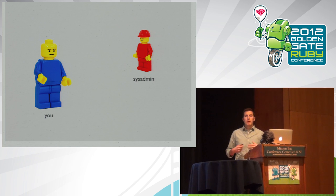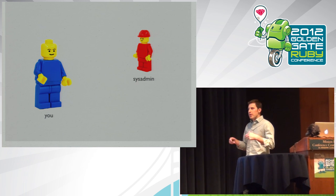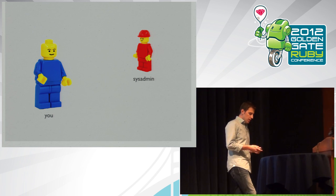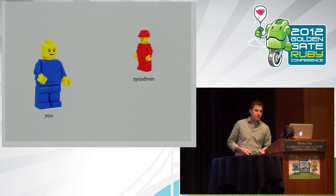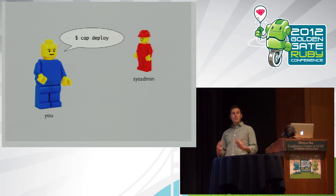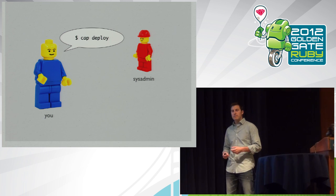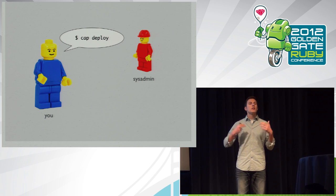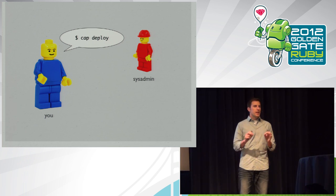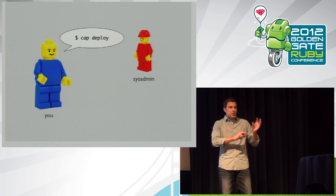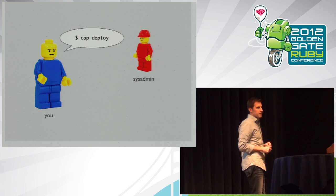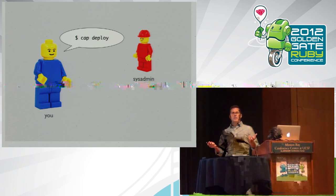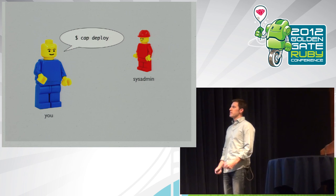We're the ones that wrote the code that had the memory leak or the error condition that brought the system down, but they're the first line of defense. A good example is when it's time to deploy new versions of our applications into production. In most organizations, you'll tell your operations team to run cap deploy. And even though you know there's gonna be all this infrastructure shifting around, processes restarting and things reconfiguring, your sysadmin trusts you.